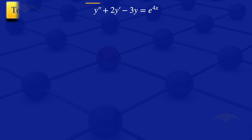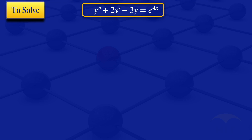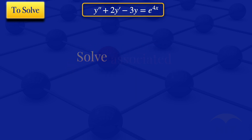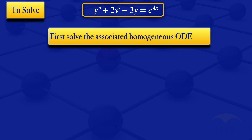To solve this non-homogeneous ODE, we first have to solve the associated homogeneous ODE. We take the right-hand side, the e^(4x), and replace it with 0. So we have to first solve the homogeneous ODE y'' + 2y' - 3y = 0.